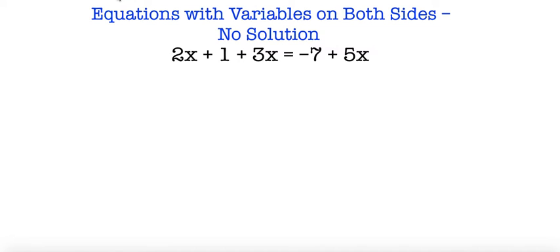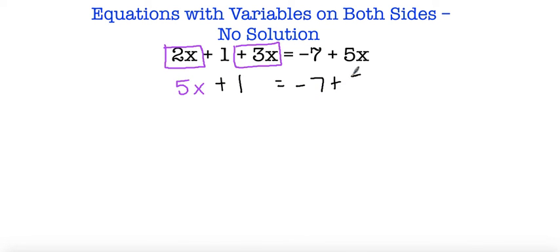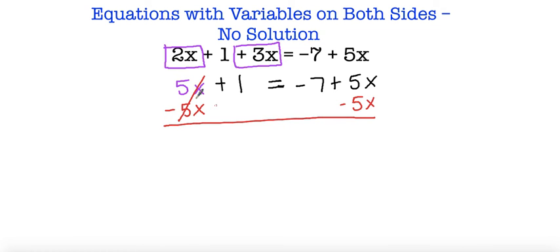Here we have our next example. First thing we have to do is combine like terms. On the left side of this equation, I have 2x and positive 3x, so that's 5x plus 1 is equal to negative 7 plus 5x. Now if I try moving my variables to the right side, I subtract 5x — this cancels out — and subtract 5x on the other side. I'm left with 1 is equal to negative 7, since the 5x and negative 5x cancel out. Since 1 is not equal to negative 7, here again we have no solution.